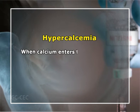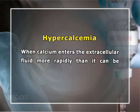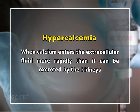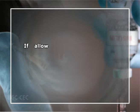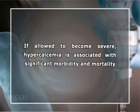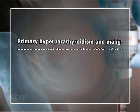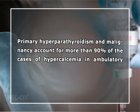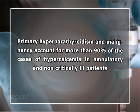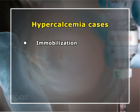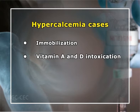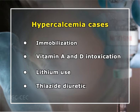Hypercalcemia occurs when calcium enters the extracellular fluid more rapidly than it can be excreted by the kidneys. If allowed to become severe, hypercalcemia is associated with significant morbidity and mortality; therefore, it is important to detect this imbalance early. Primary hyperparathyroidism and malignancy account for more than 90% of cases of hypercalcemia in ambulatory and non-critically ill patients. Only a small percentage of hypercalcemia cases are due to immobilization, vitamin A and D intoxication, lithium use, and thiazide diuretics.